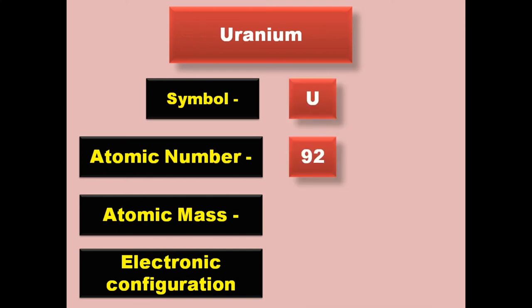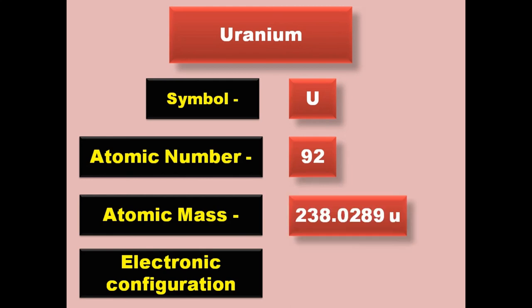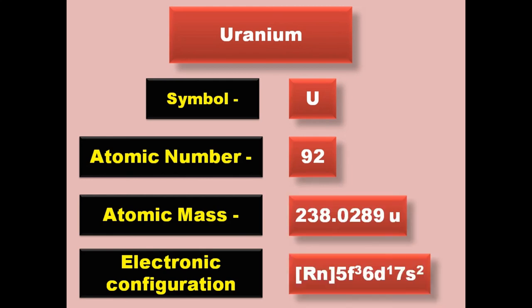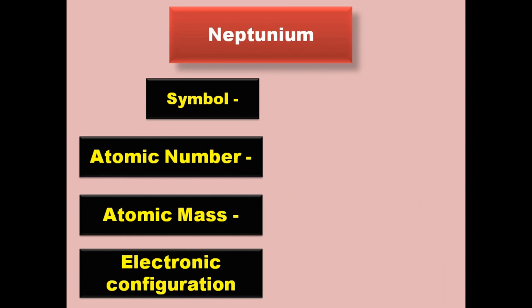Uranium has symbol U, atomic number 92, atomic mass 238.0289, electronic configuration [Rn] 5f3 6d1 7s2. Uranium is an actinide and exists in solid form at room temperature.